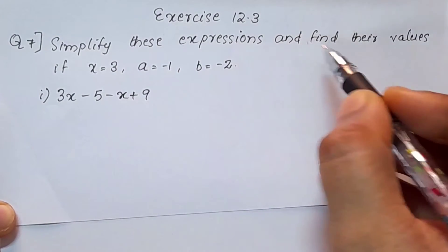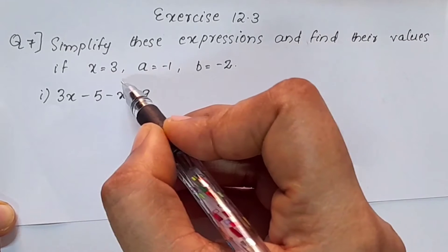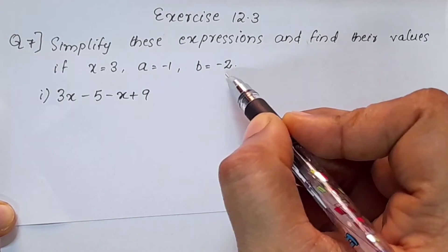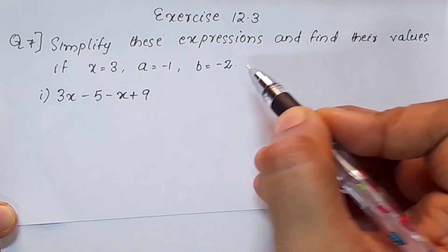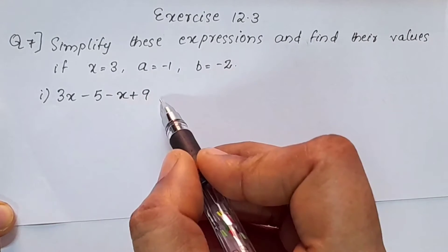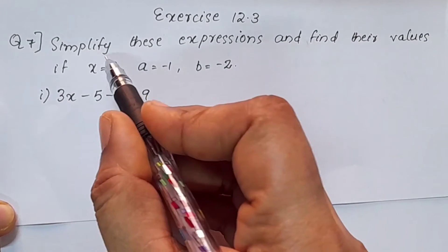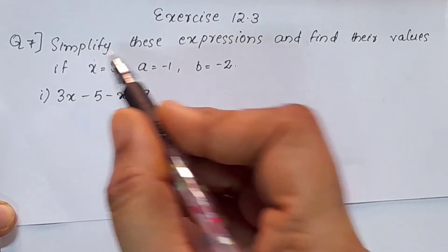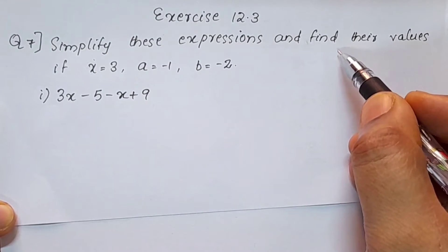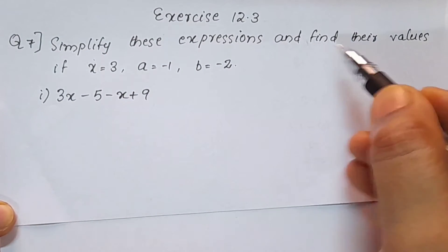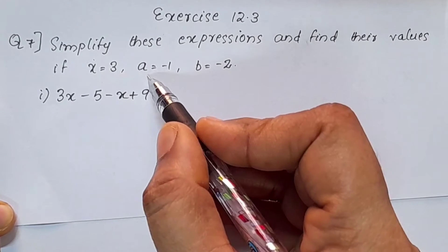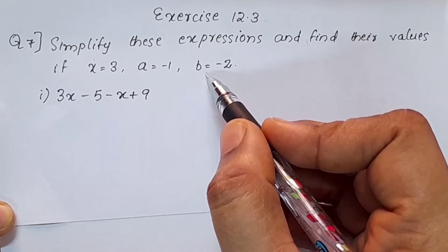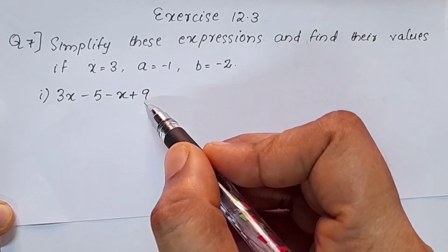Simplify these expressions and find their values if x is equal to 3, a is equal to negative 1, b is equal to negative 2. We need to simplify the expression and substitute the values.